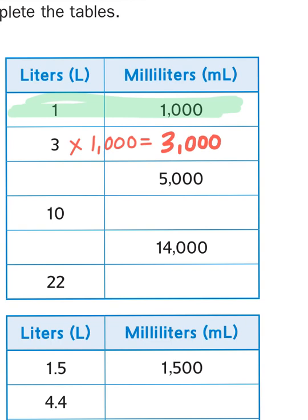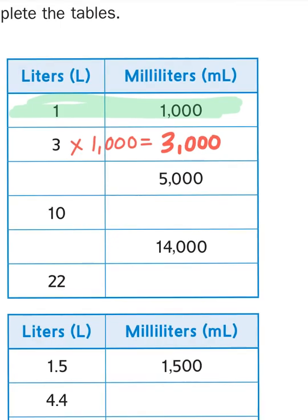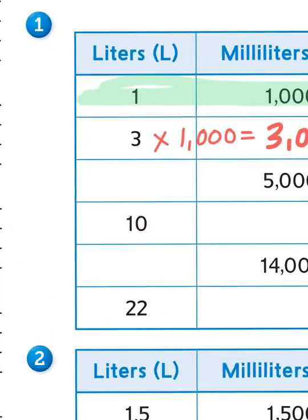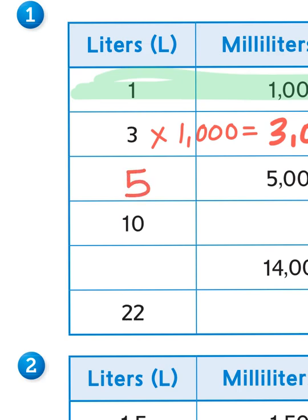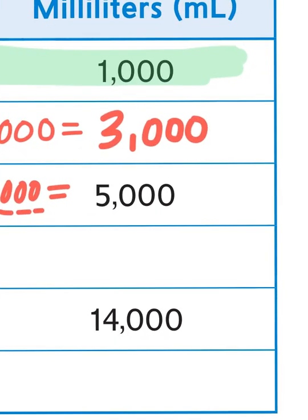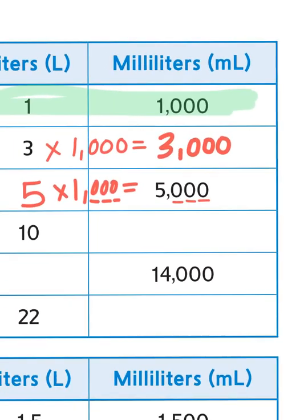So thinking in reverse, if I have 5,000 milliliters, that's the equivalent of what? What times 1,000 gives me 5,000? That would be 5. 5 times 1,000 equals 5,000, or 5 times 1 with 1, 2, 3 zeros is going to give me 5 with 1, 2, 3 zeros.